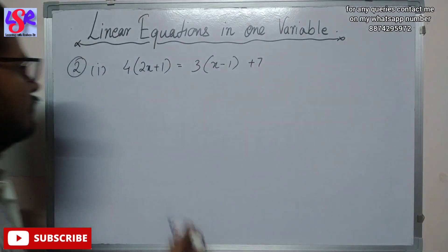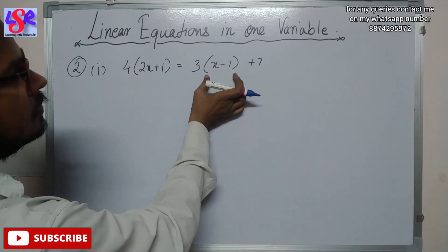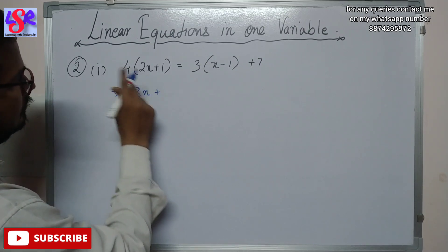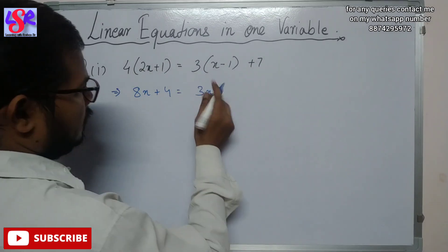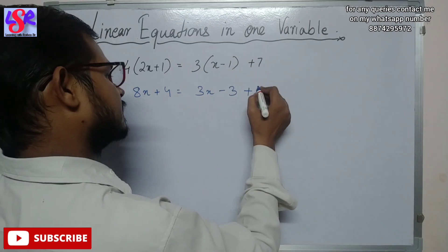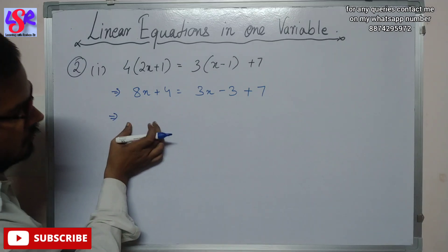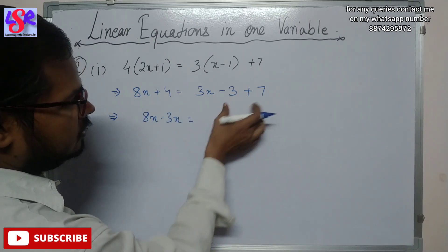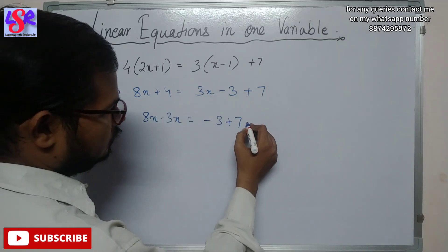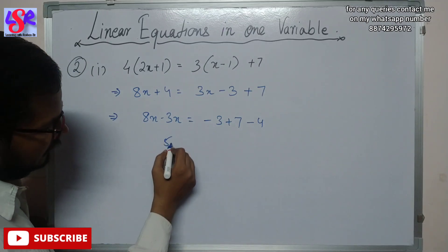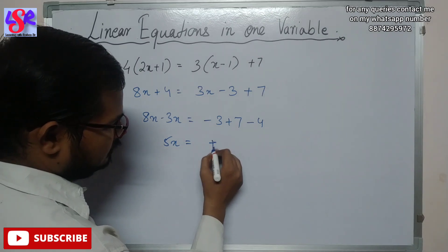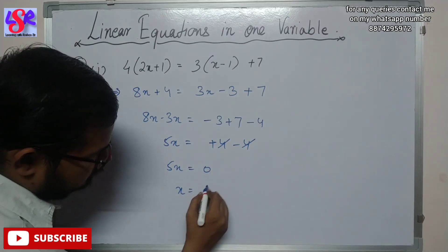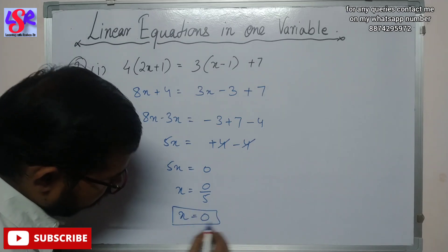Now let's see question number 2, first part. Here we have 4 into bracket 2x plus 1 equals to 3 into x minus 1 plus 7. Opening brackets: 8x plus 4 equals to 3x minus 3 plus 7. Rearranging variables: 8x minus 3x equals to minus 3 plus 7 minus 4, giving 5x equals to 0, so x equals to 0 as answer.